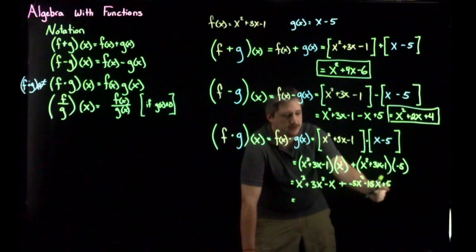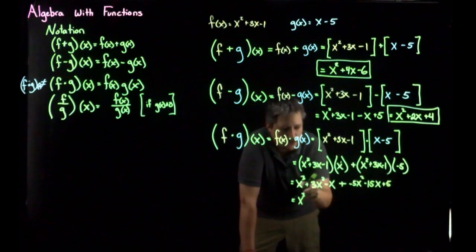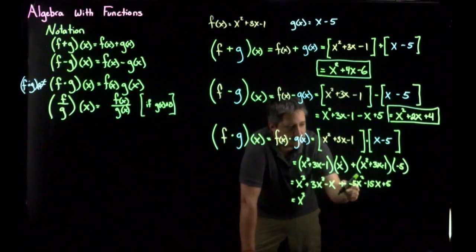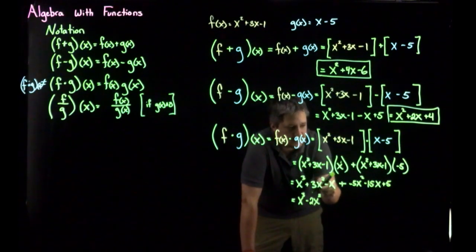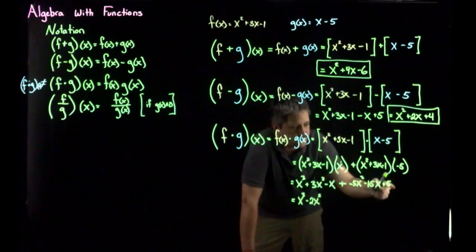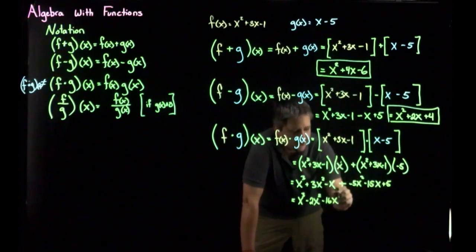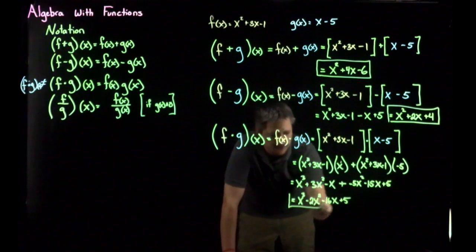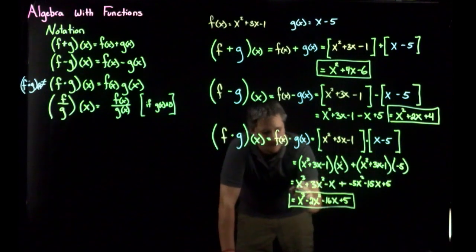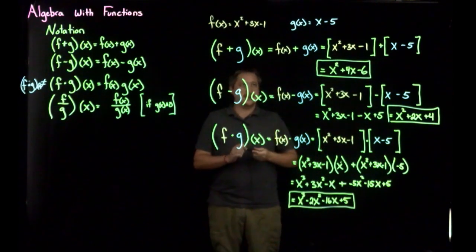Now combining like terms: X cubed is the only cubic. For squared terms: 3x squared minus 5x squared gives minus 2x squared. For linear terms: minus X minus 15x gives minus 16x. Plus 5. Final answer: X cubed minus 2x squared minus 16x plus 5.